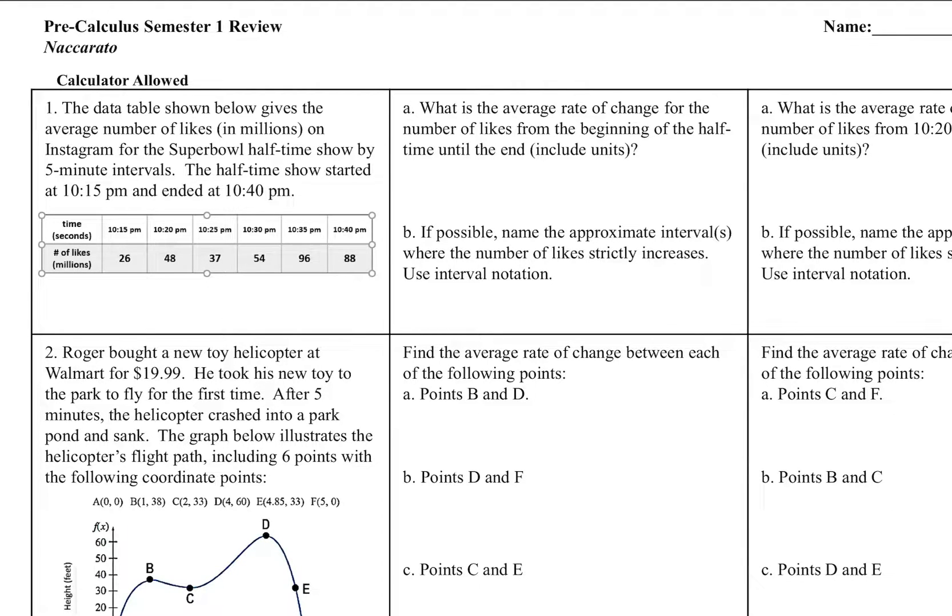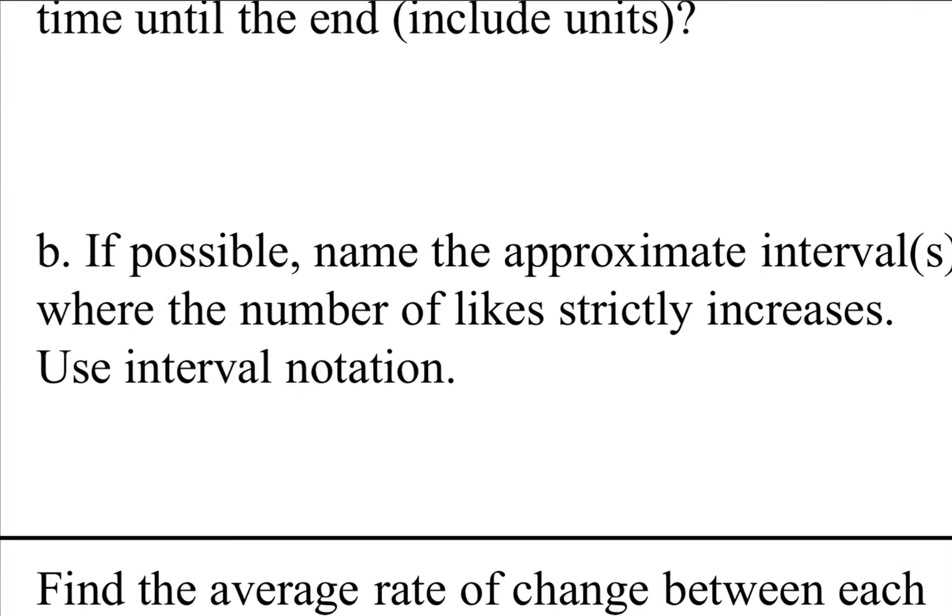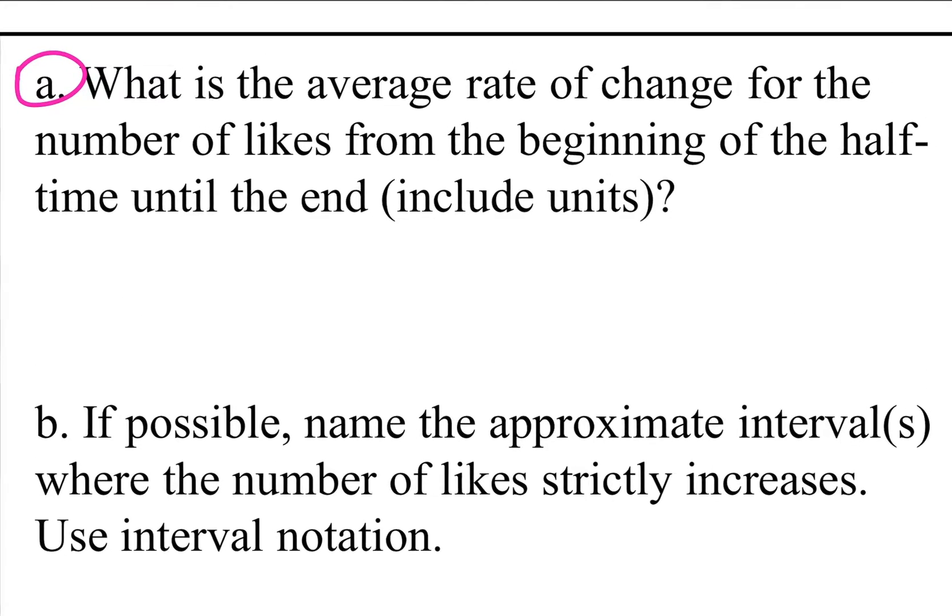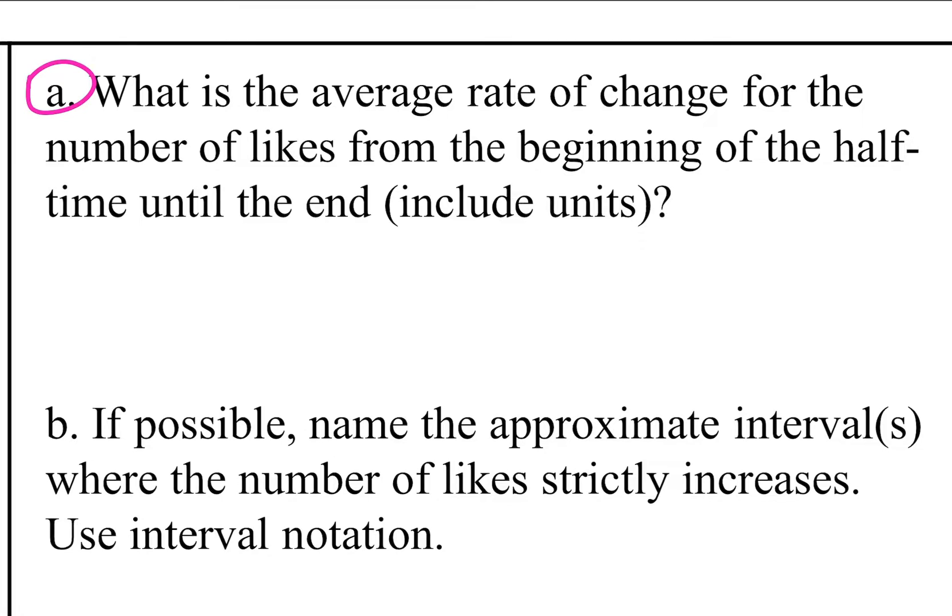So taking a look at this first one, it says the data table shows the average number of likes on an Instagram for a Super Bowl halftime show by five minute intervals. The halftime show started at 10:15 and ended at 10:40. The first question they ask us in part A says, what is the average rate of change for the number of likes from the beginning of the halftime show until the end? Include units. Remember, average rate of change is really just cuing us into the fact that we're going to use slope, which if you remember slope is that y2 minus y1 over x2 minus x1 formula.